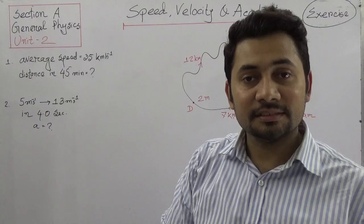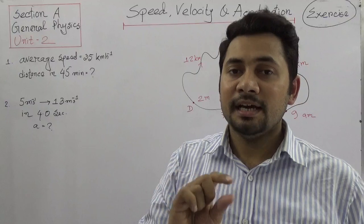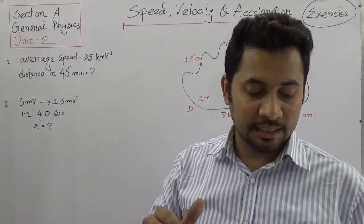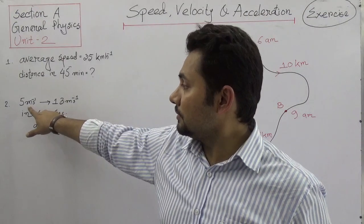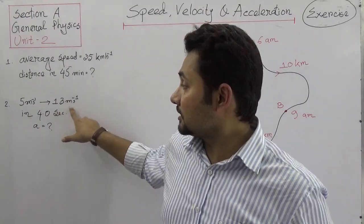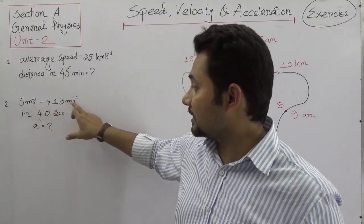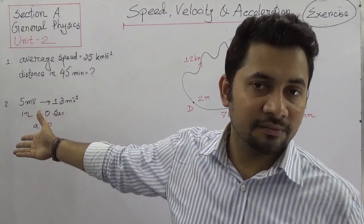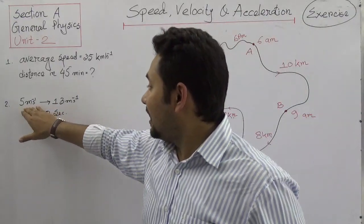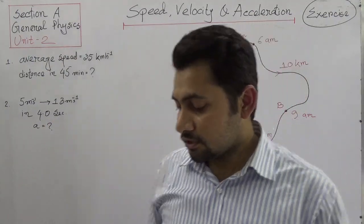The second question: a car accelerates uniformly from 5 meters per second to 13 meters per second. So the velocity is changing — it gets higher, from 5 meters per second up to 13 meters per second. It means the initial velocity was less and the final velocity is higher. In 4 seconds, what is the acceleration? That is the question.